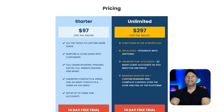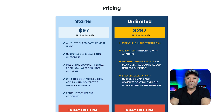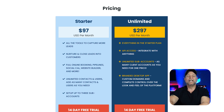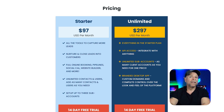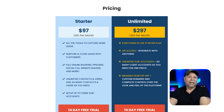Go High Level is definitely an investment. It starts out at $97 a month, which might seem a little steep at first, but keep in mind it includes everything: a CRM, funnel builder, email and SMS marketing, appointment scheduling, and even client management features. If you're running an agency or need advanced tools, the unlimited plan at $297 a month opens up even more functionality, including the ability to white-label the platform. With Go High Level, you're essentially replacing multiple subscriptions, so the value adds up quickly.